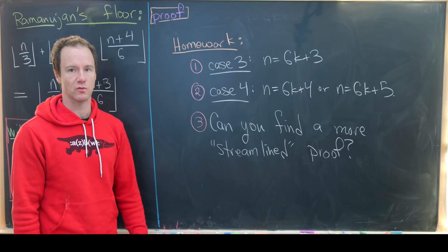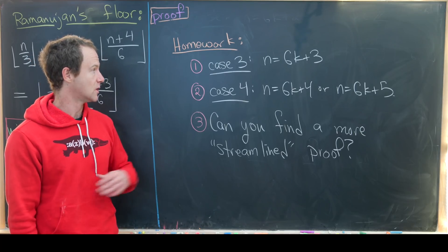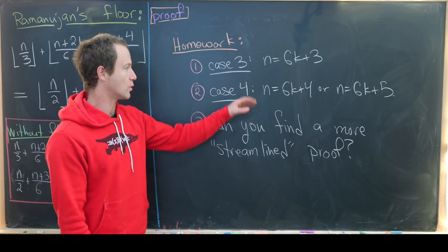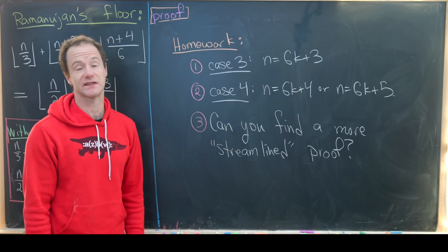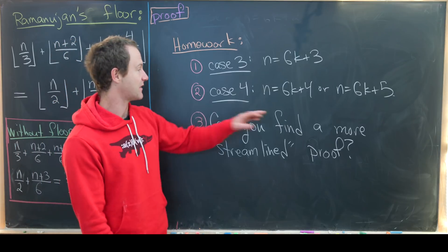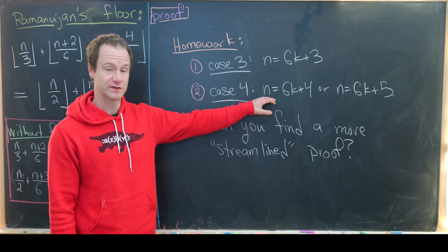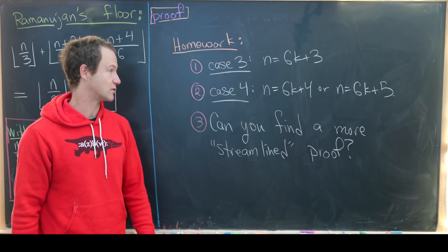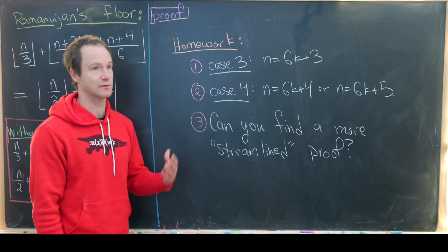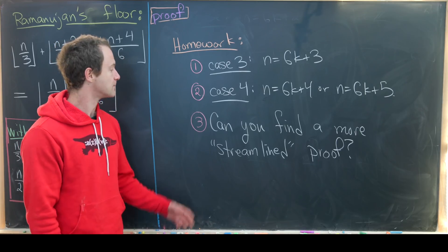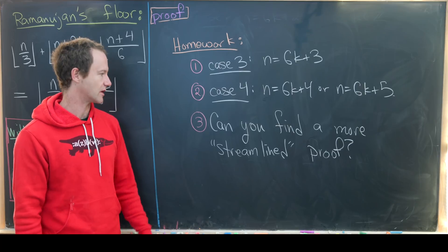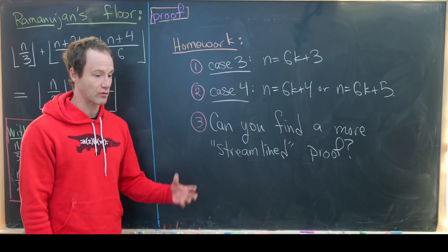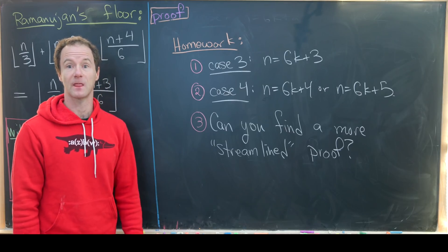The other two cases are very similar, so I'll leave those as homework. Case 3 is n = 6k + 3 and Case 4 is n = 6k + 4 or 6k + 5. I think Case 4 can be handled similarly to Case 1 using n = 6k + δ with δ = 4 or 5, or even 6k − δ with δ = 1 or 2. A trickier bonus question: can you find a more streamlined proof that avoids a full case-by-case analysis? And that's a good place to stop.